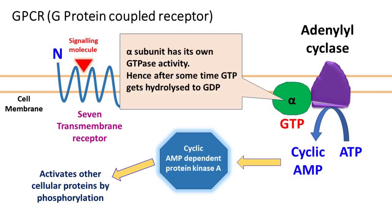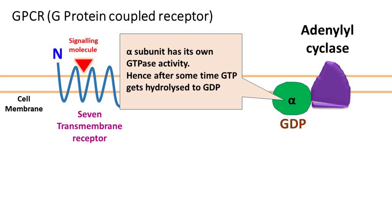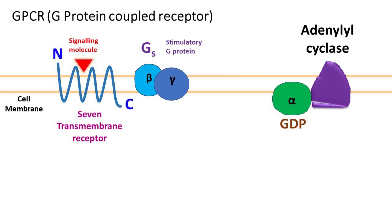Now the alpha subunit has its own GTPase activity. Because of this, the GTP gets hydrolyzed to GDP. The GDP-bound alpha subunit is inactive. The inactive alpha subunit again returns to the beta and gamma subunit, which remains attached with the G-protein coupled receptor.